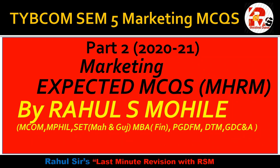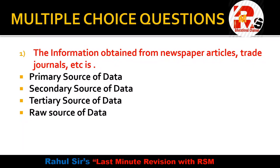Question number 1: The information obtained from newspapers, articles, trade journals, etc. is — Primary source of data, Secondary source of data, Tertiary source of data, or Raw source of data?